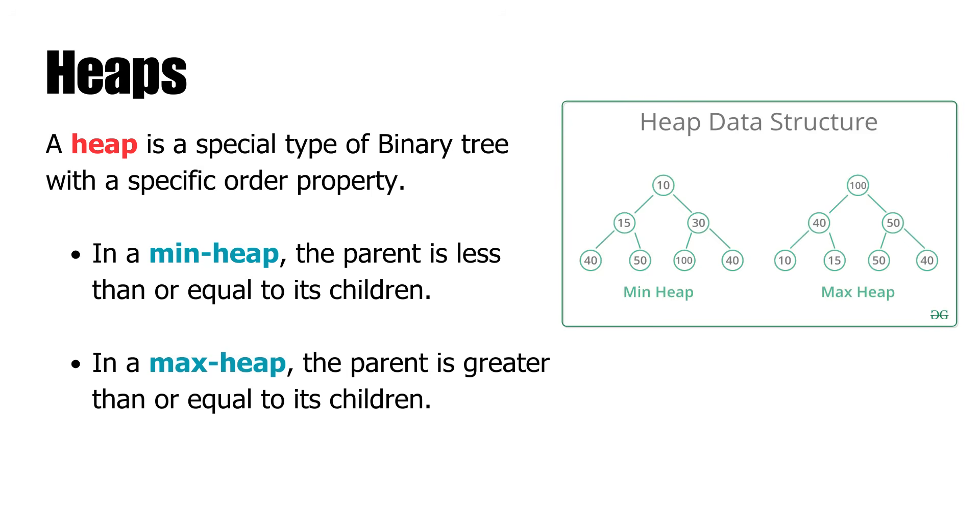A heap is a binary tree with one unique ordering property. In a min heap, the parent node is less than or equal to the child, such that the smallest item is always at the root. In a max heap, the parent is greater than or equal to the children, placing the largest item at the root. All heaps are complete binary trees, i.e. they are fully filled at all levels except possibly the last level.